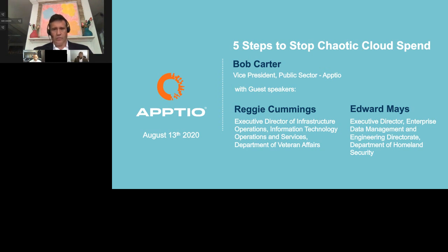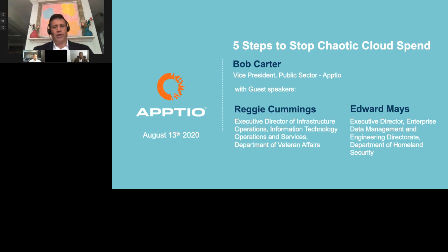Thanks again to our sponsor, Aftio. I appreciate the opportunity. I'd like to introduce our guests this afternoon: Reggie Cummings, Executive Director of Infrastructure Operations for IT Operations and Services for the Department of Veteran Affairs, and Ed Mays, Executive Director of Enterprise Data Management and Engineering Directorate for Homeland Security — specifically CBP. I'm going to spend about five or six minutes laying the groundwork, then we'll get into a series of questions and answers with our guests and come full circle back to the five steps to stop chaotic cloud spend.